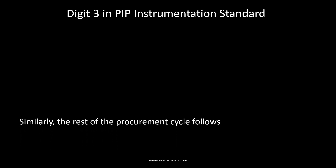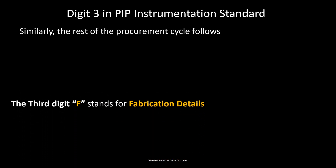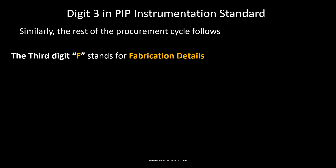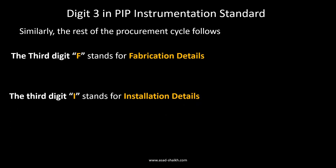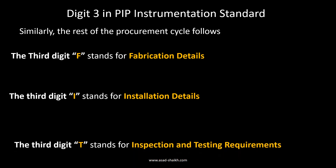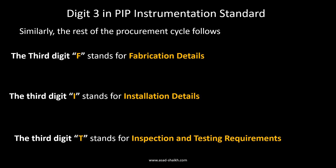After a particular instrument is specified, we need fabrication details — the third digit F covers this. After fabrication comes installation details: for example, how to install a DP flow meter transmitter relative to the tapping based on service. The third digit I covers installation. Similarly, the third digit T stands for inspection and testing requirements. The standards are thus linked to the procurement cycle: fabricate, install, then inspect and test.